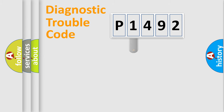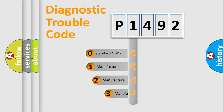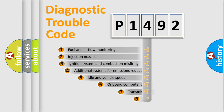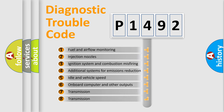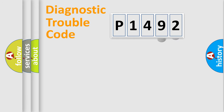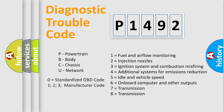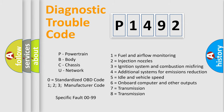This distribution is defined in the first character of the code. If the second character is expressed as zero, it is a standardized error. In the case of numbers 1, 2, or 3, it is a manufacturer-specific error. The third character specifies a subset of errors. This distribution is valid only for the standardized DTC code, and only the last two characters define the specific fault of the group.